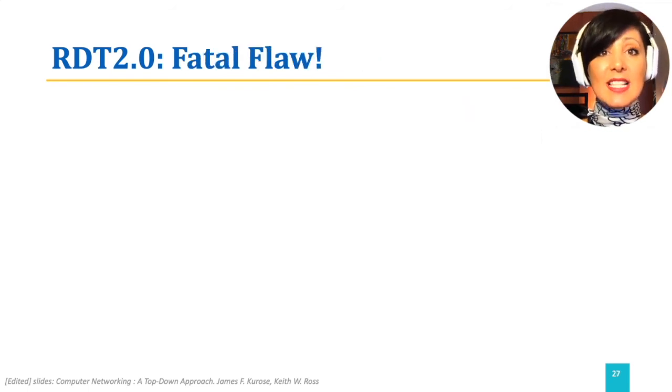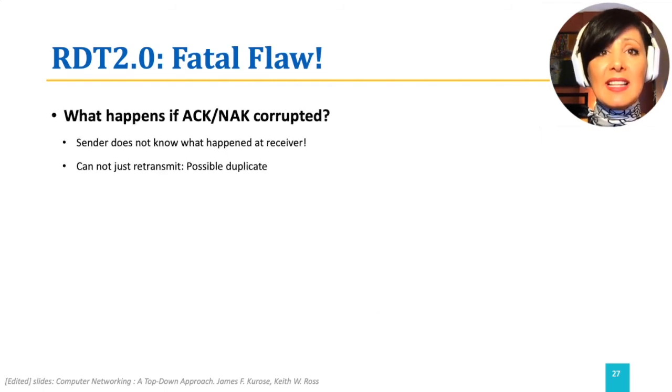RDT 2.0 we just designed has a fatal flaw. It does not consider the possibility that using unreliable channel could also corrupt ACK and NAK packets. If ACK and NAK packets get corrupted, the sender cannot tell if it received an ACK or a NAK, and therefore, cannot react properly to what it received.